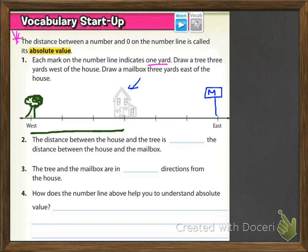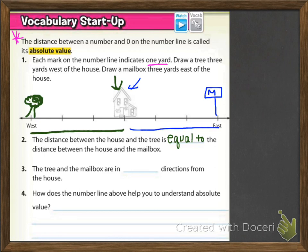It also asks you to draw a mailbox three yards east of the house. So again we look for our house — that's right there at zero — and then we go one, two, three. That's three yards east, so we draw a mailbox there. It says the distance between the house and the tree is blank the distance between the house and the mailbox. Since they're both three yards, the distances are equal. The tree and the mailbox are in opposite directions from the house, so you want to write 'opposite.'